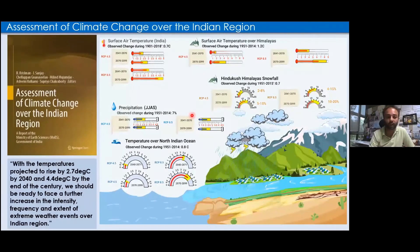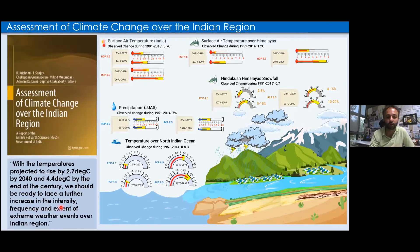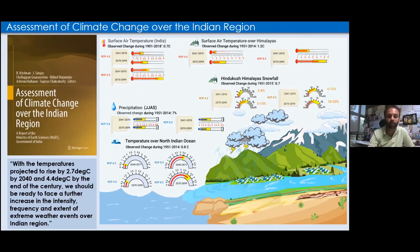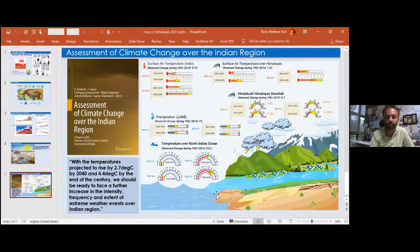For reference, we have a report on the assessment of climate change over the Indian region — the first such report from India. It shows that temperatures are projected to increase by 2.7 to 4.5°C by the end of the century, likely resulting in increased intensity, frequency, and extent of extreme weather events. This is an open-access report with a chapter specifically on the Himalayas.